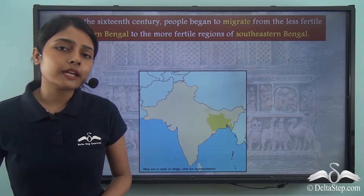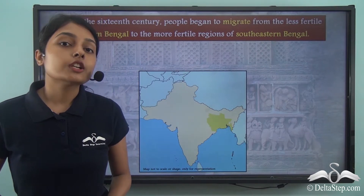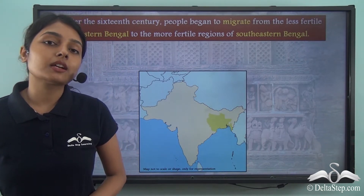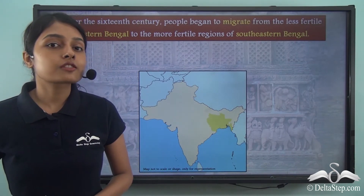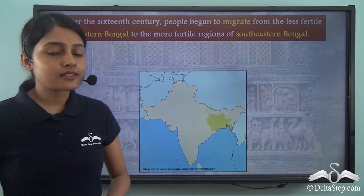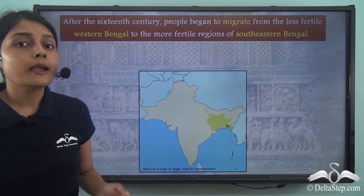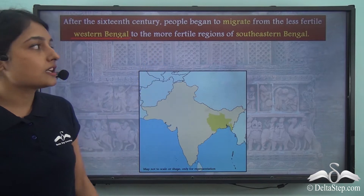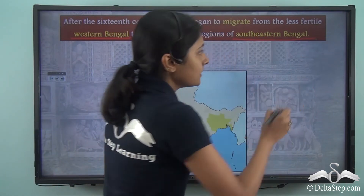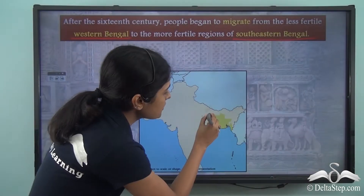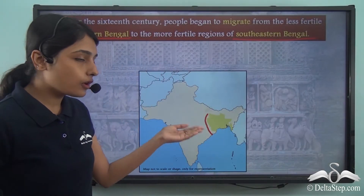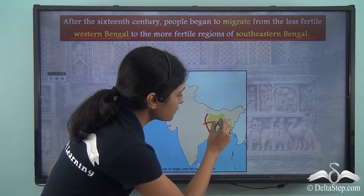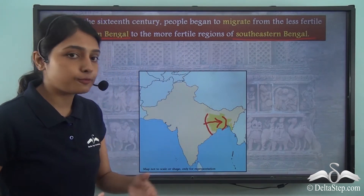Now when we talk about Bengal, we also have to take into account the geographical location of Bengal and how it was very important in shaping the cultural landscape of this region. Now after the 16th century, people of Bengal started migrating from the less fertile Western Bengal to the more fertile regions of Southeastern Bengal. This shows that following the 16th century, the lands in Western Bengal became very infertile, which is why people were forced to migrate to the Southeastern region of Bengal.